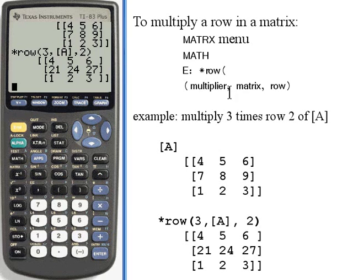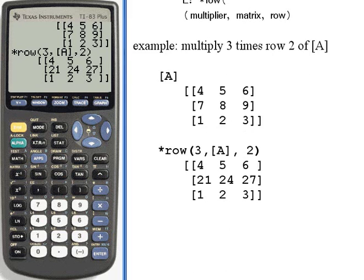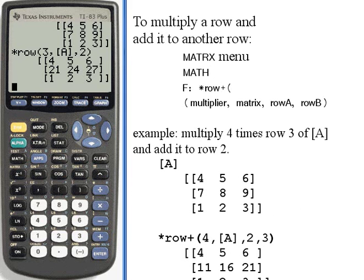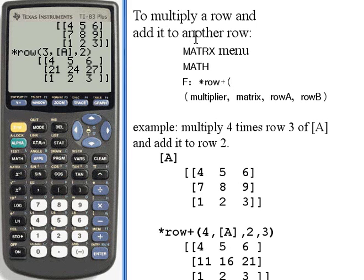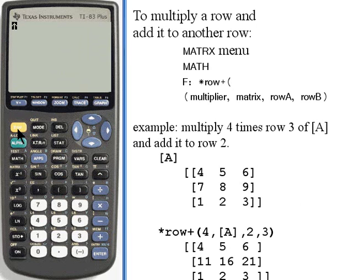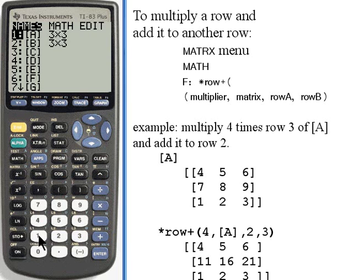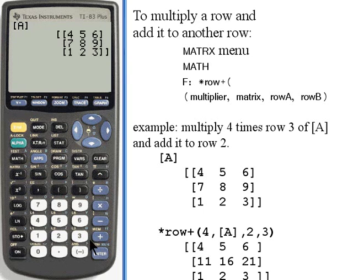To review the input for this operation, you start out with the multiplier, then the matrix name, and then the row that you want to multiply. Let's go on to the last one. In this we're going to multiply a row, but then we're going to add that to another row. I'll clear the screen, display matrix A. You don't have to display the matrix first, I'm just doing it so we can compare what we start with and what the result is.